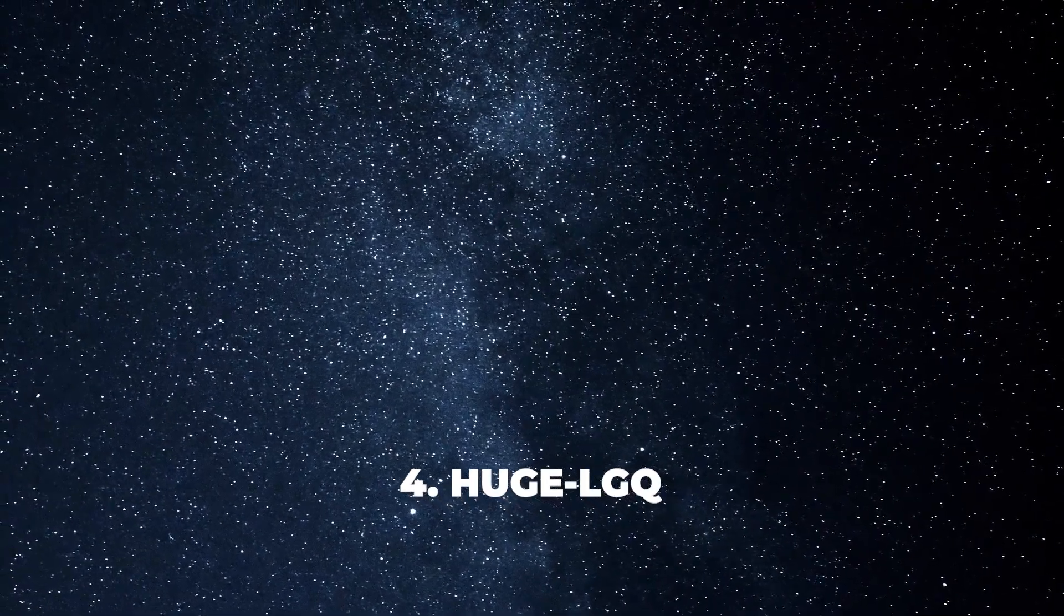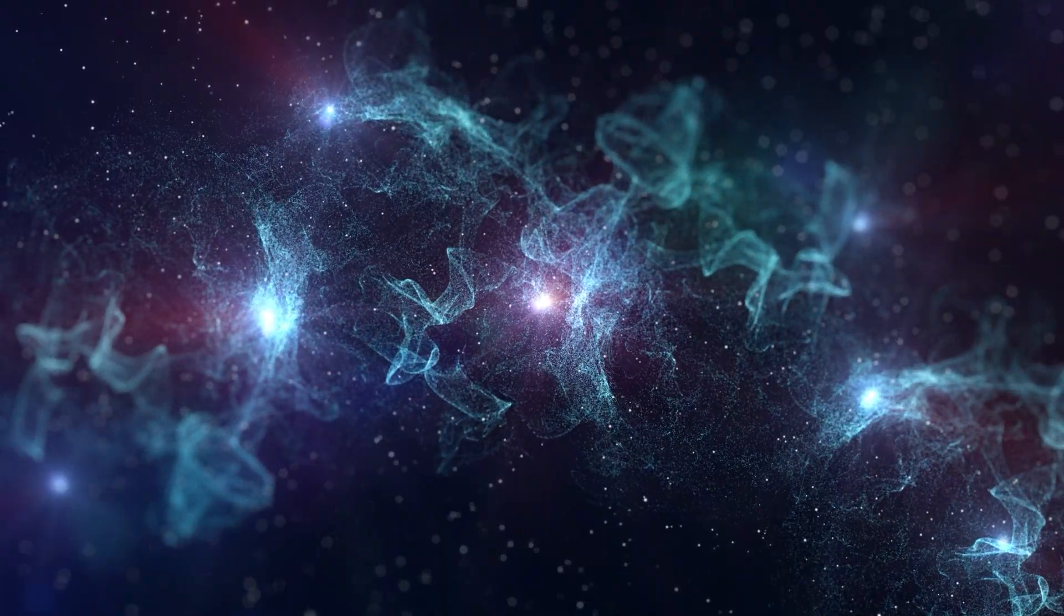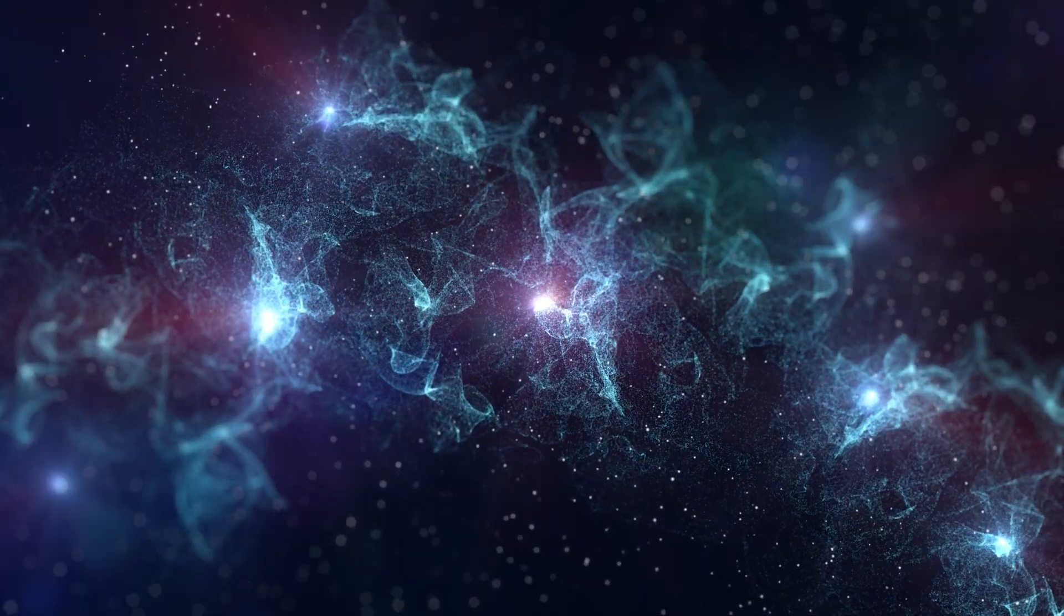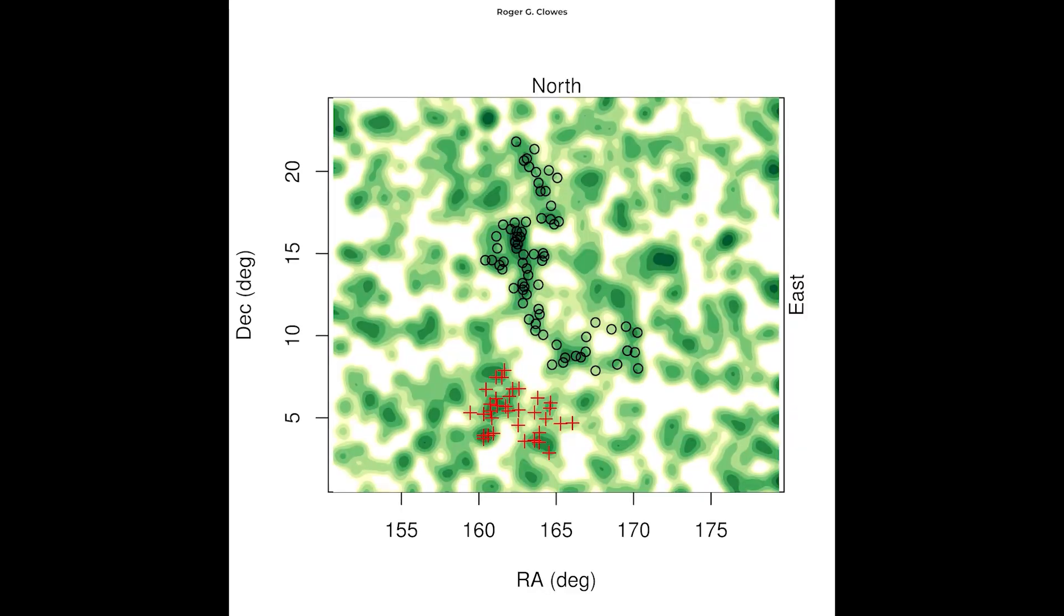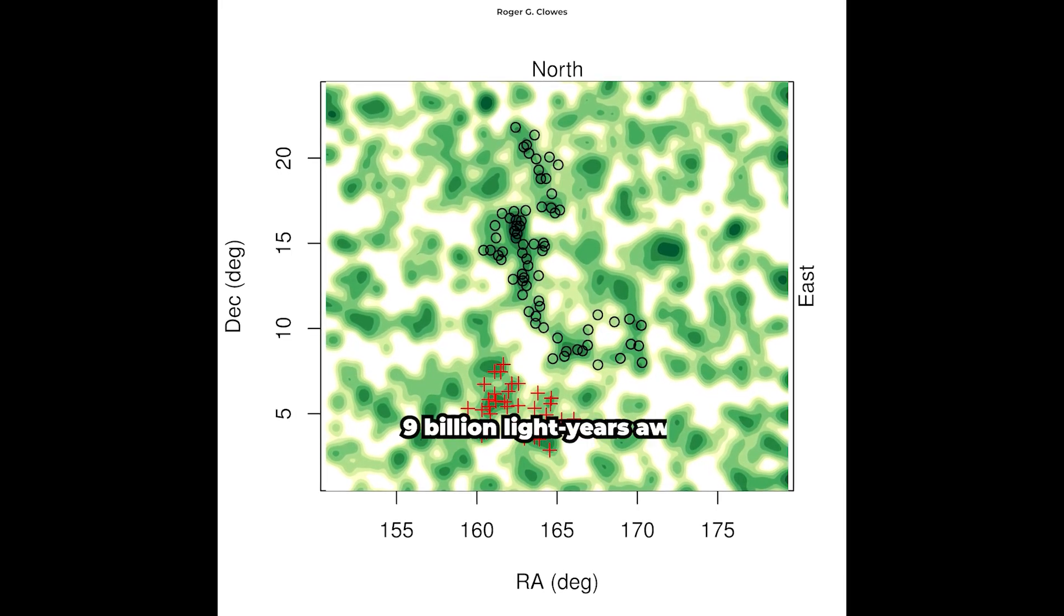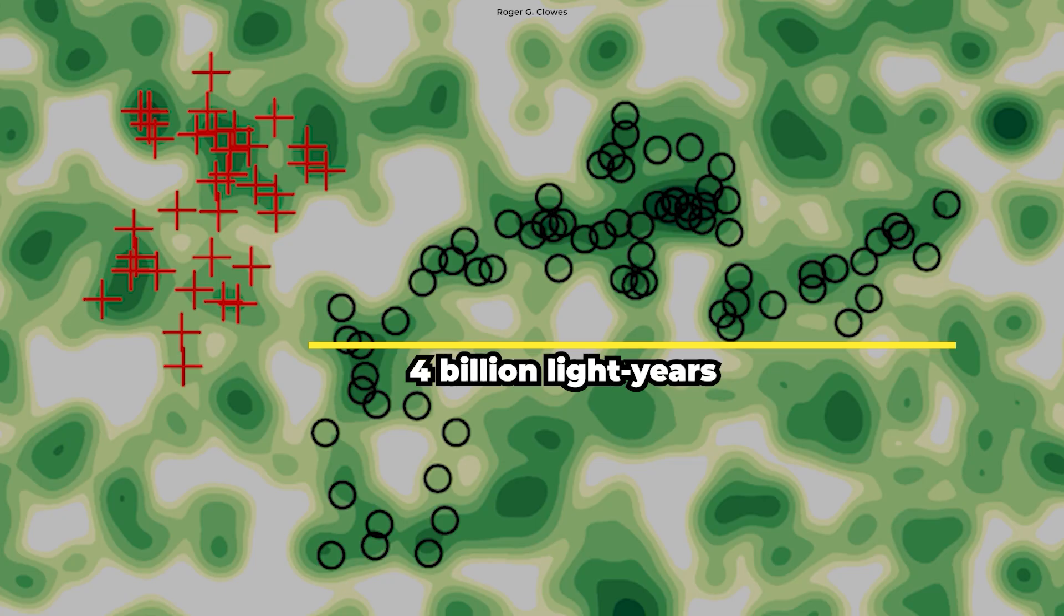At number 4, we delve into a fascinating and colossal cosmic structure that was the first structure found to exceed 3 billion light-years, the Huge LGQ, short for the Huge Large Quasar Group. The Huge LGQ is an enormous group of quasars about 9 billion light-years away from Earth that stretches across an estimated 4 billion light-years in its longest dimension.